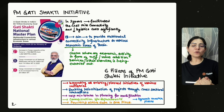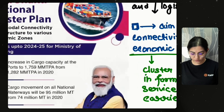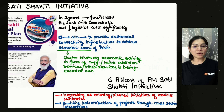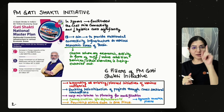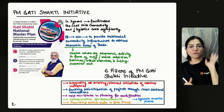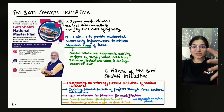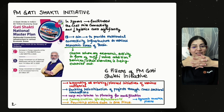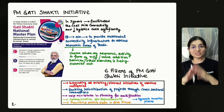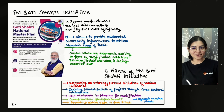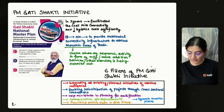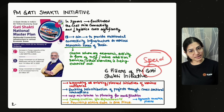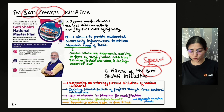This initiative has six pillars. The first pillar is to create a National Master Plan — a plan that will connect all modes of transportation in India under one framework. Then all ministries are to be integrated, plans coordinated together, and all data consolidated into a single database related to transport infrastructure.